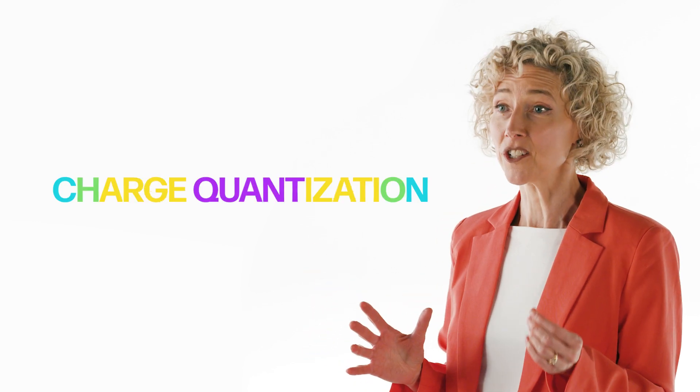The idea goes back to the physicist Paul Dirac, who explained to us how it is that the existence of even one magnetic monopole anywhere in the universe leads to what's called charge quantization.